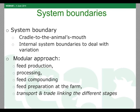For our analysis, we defined the system boundary as cradle to the animal's mouth — essentially everything belonging to feed production, processing, transport, and preparation of the animal's ration. To deal with the variation, we came up with a set of internal system boundaries which allow you to skip a part of the whole supply chain. This led to the modular approach, where we distinguished four modules.